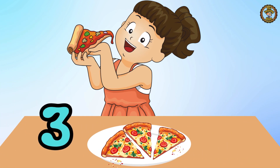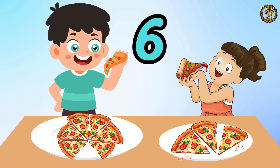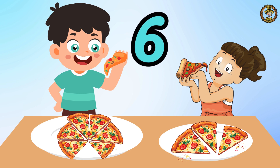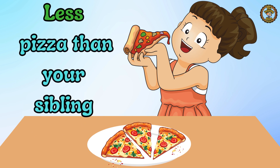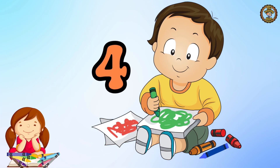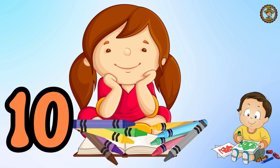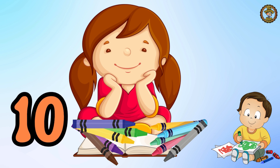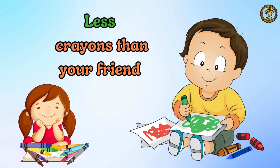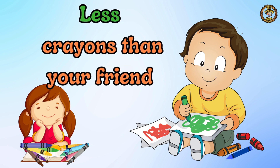You have three slices of pizza, but your sibling has six slices — you have less pizza than your sibling. Suppose you have four crayons but your friend has ten crayons; it means you have less crayons than your friend.